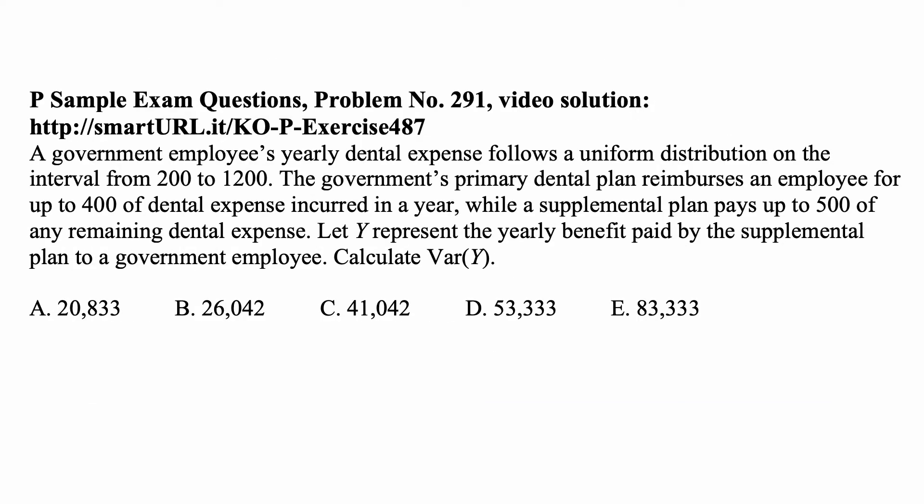Here's a problem for today for exam P on probability. A government employee's yearly dental expense follows a uniform distribution on the interval from 200 to 1200. The government's primary dental plan reimburses an employee for up to 400 of dental expense incurred in a year, while a supplemental plan pays up to 500 of any remaining dental expense. Let Y represent the yearly benefit paid by the supplemental plan to a government employee. Calculate the variance of Y.